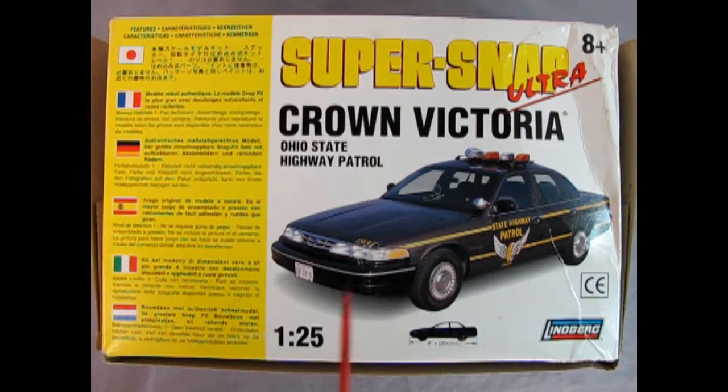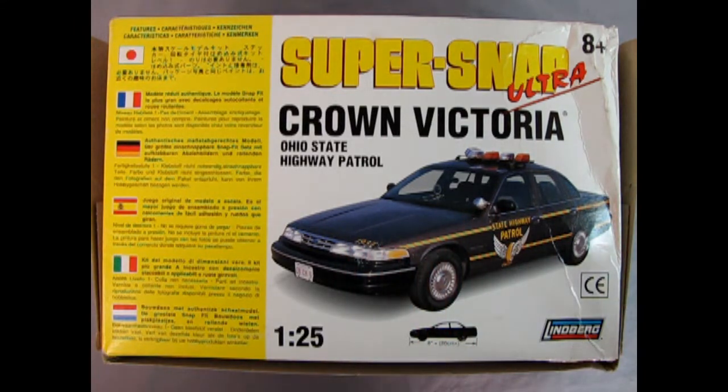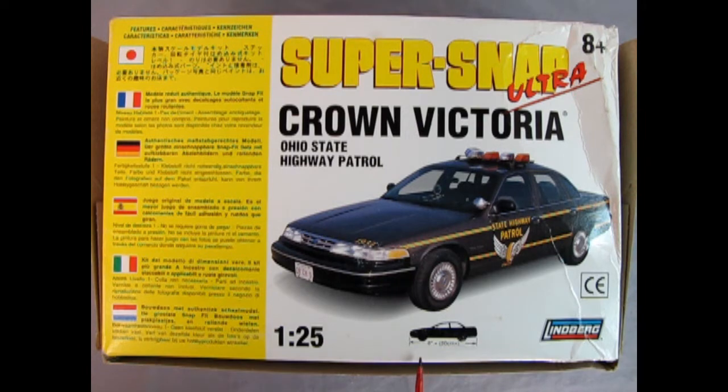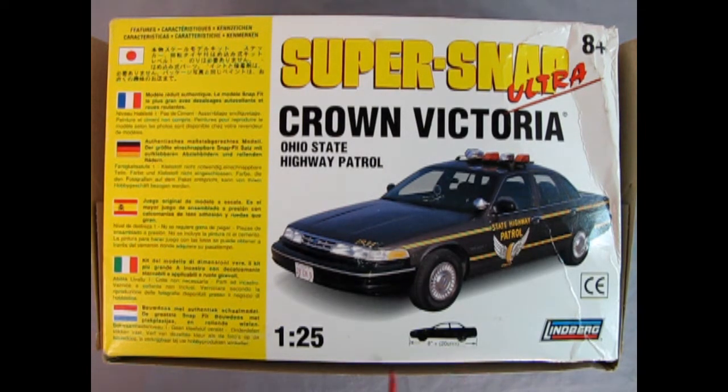On the bottom of the box we have some more details about Crown Victoria. It is intended for ages 8 and up. The model kit is 8 inches in length which is 20 centimeters. We also have the instruction sheet with Japanese, French, German, Spanish, Italian and Dutch. So again you get a lot of cool things in this model.